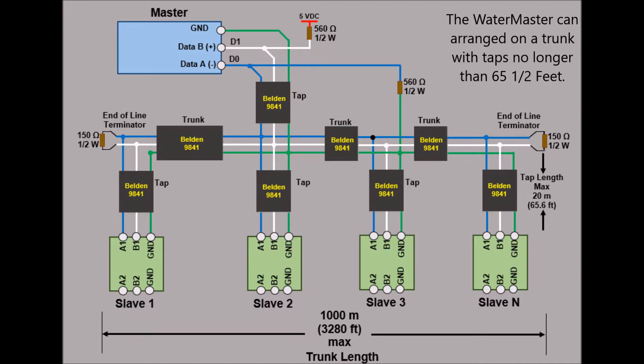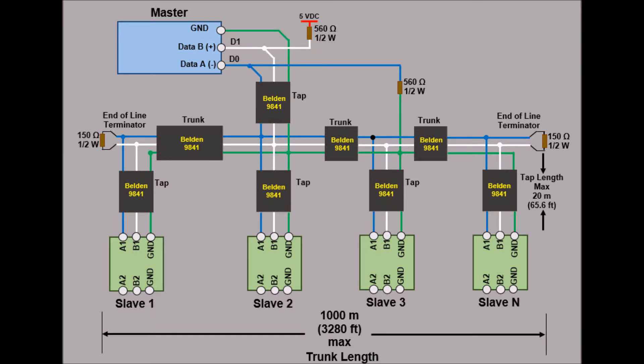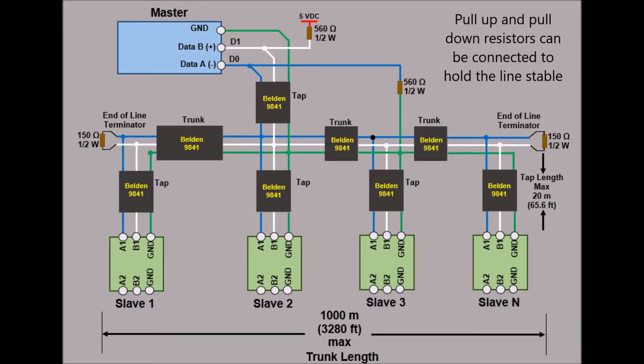The Watermaster can be arranged on a trunk with taps no longer than 65.6 feet. When there is no data activity on an RS-485 balanced pair, the lines are not driven and are thus susceptible to external noise or interference. To ensure that the receiver stays in a constant state when no data signal is present, the signal lines need to be biased from a single point on the bus at or close to the master.